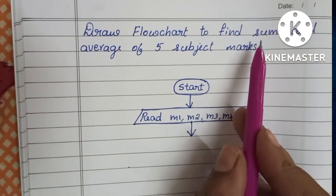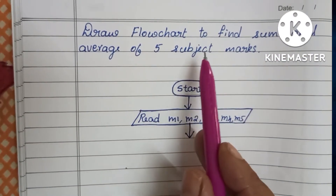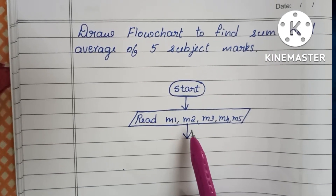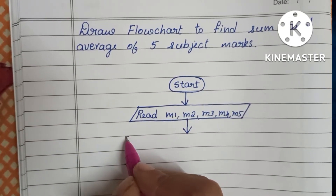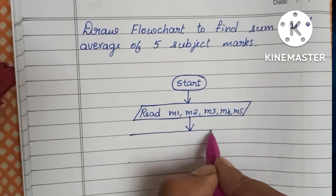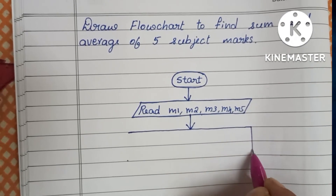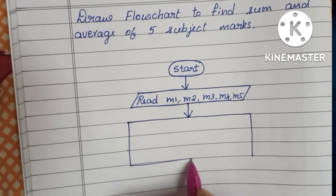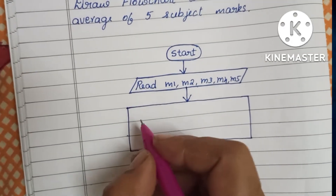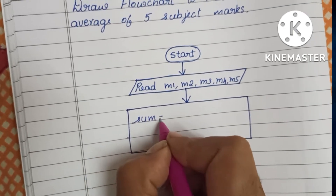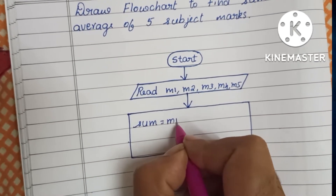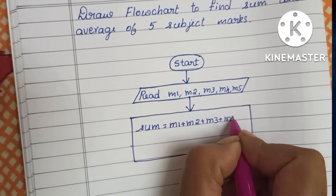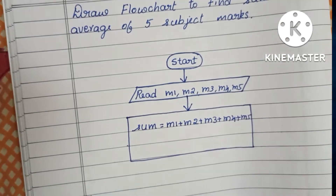Next we start the process — we have to find the sum and average of the five subject marks. The sum is the summation of five subject marks. Process steps are done within a rectangular shape. Sum is equal to m1 plus m2 plus m3 plus m4 plus m5.